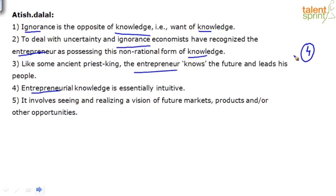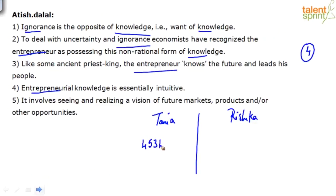Tanya and Rishika are giving me different sequences. I'm going to take both. Tanya's sequence: four, five, three, one, two. Rishika's: four, two, five, three, one. Let's see which one is correct — or maybe both of you are wrong. The clue word is 'intuitive'.